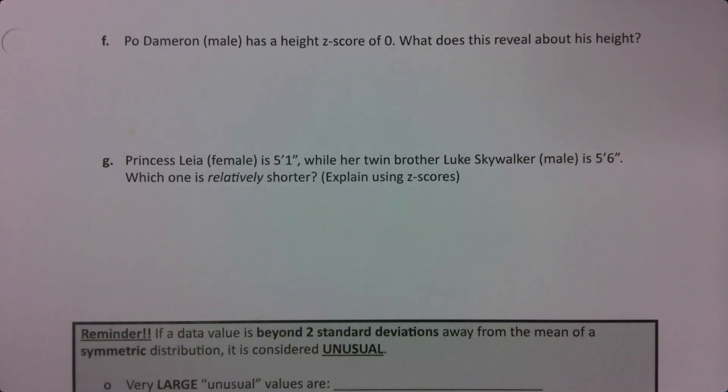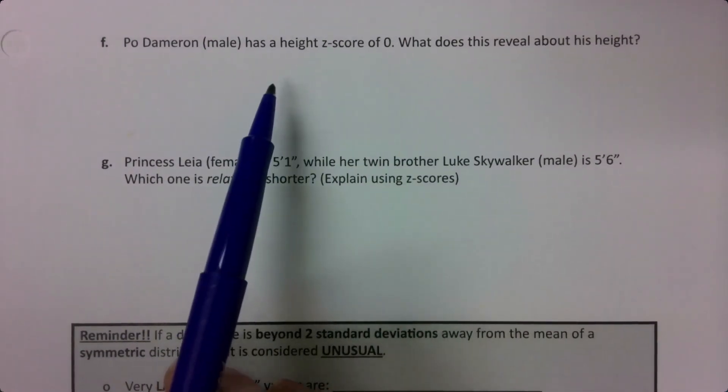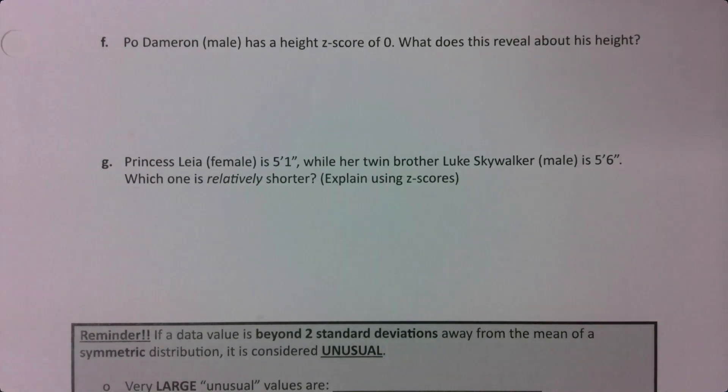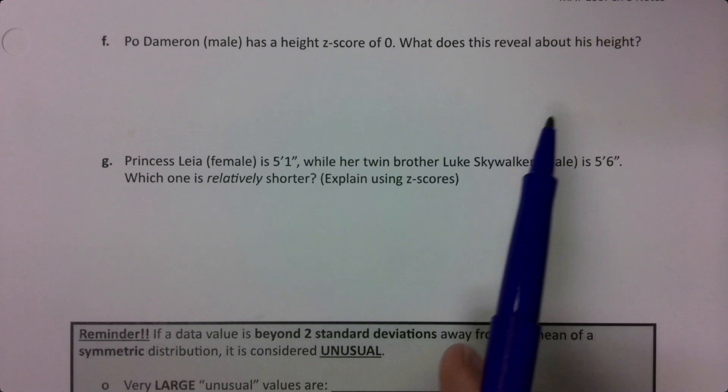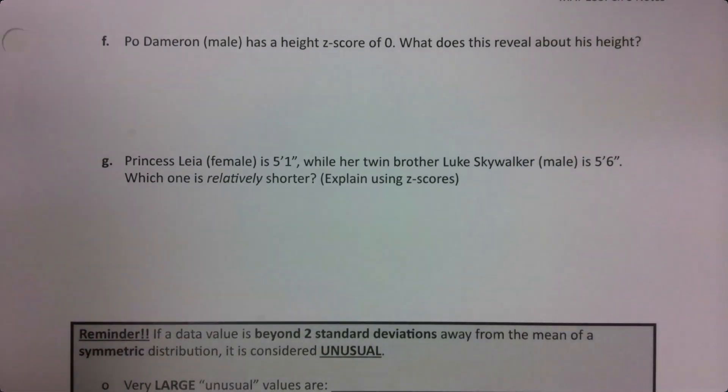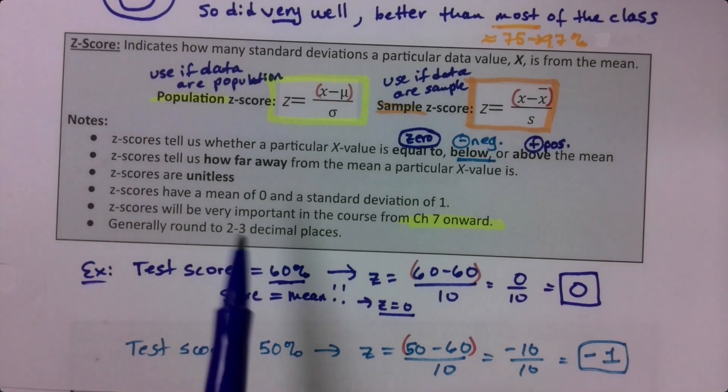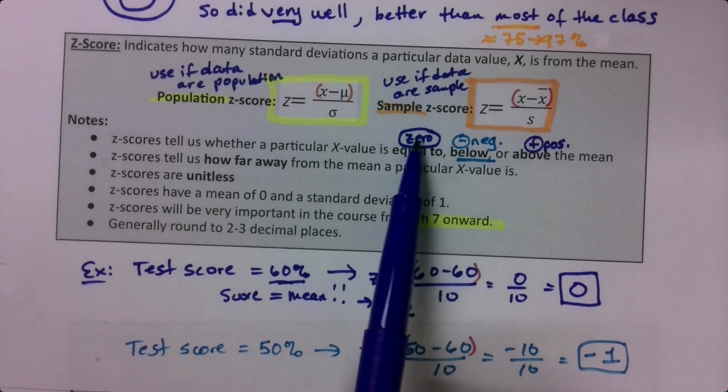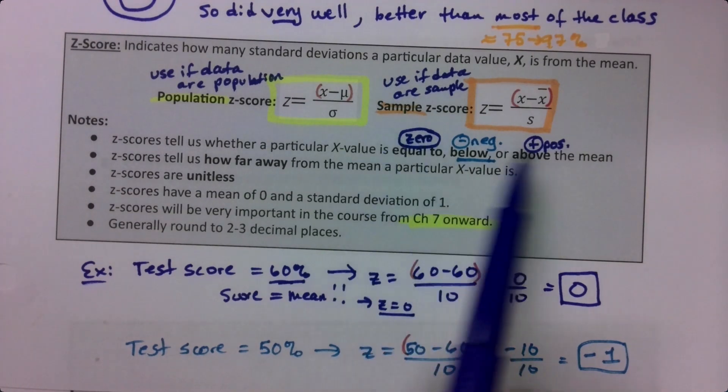Continuing with our analysis of z-score, let's consider Poe Dameron, who is a male. He has a height z-score of zero. What does this reveal about his height?